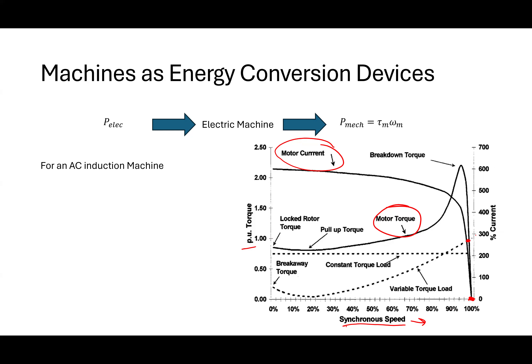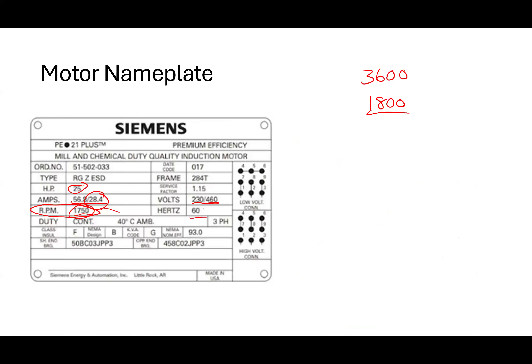At one per-unit torque — his rated torque — how much is the speed different from the maximum? Not much. So the maximum speed is 1800 RPM, and at full load he's at 1750 — he's only dropped 50 RPM away from there.